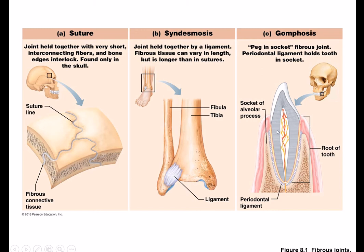Gomphosis is your tooth in the alveolar processes of the maxillae and mandible — peg-and-socket joints. The peg is your tooth, the socket is the alveolar process, and the teeth are secured to the alveolar process through a periodontal ligament.